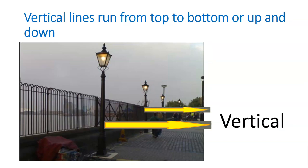Time is up, now let's find out. Vertical lines run from top to bottom or up and down. Take a look at this lamp post. The post forms a line that goes from up and down or top to bottom. This is called a vertical line.